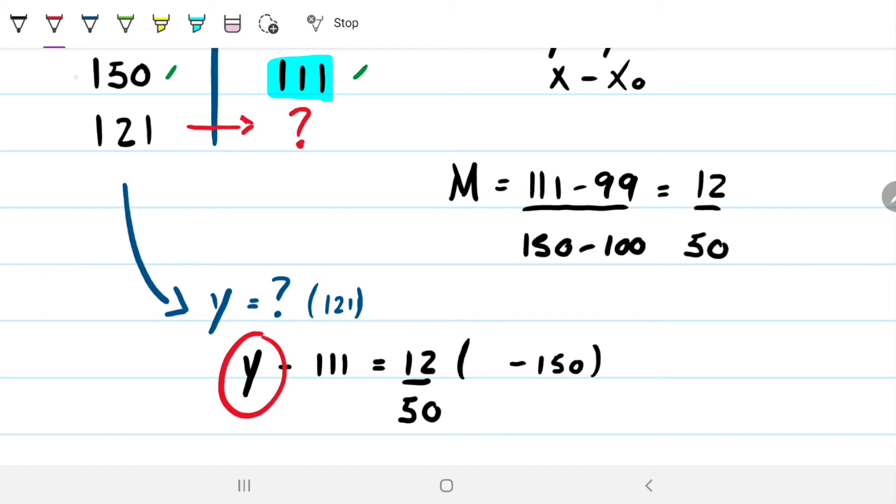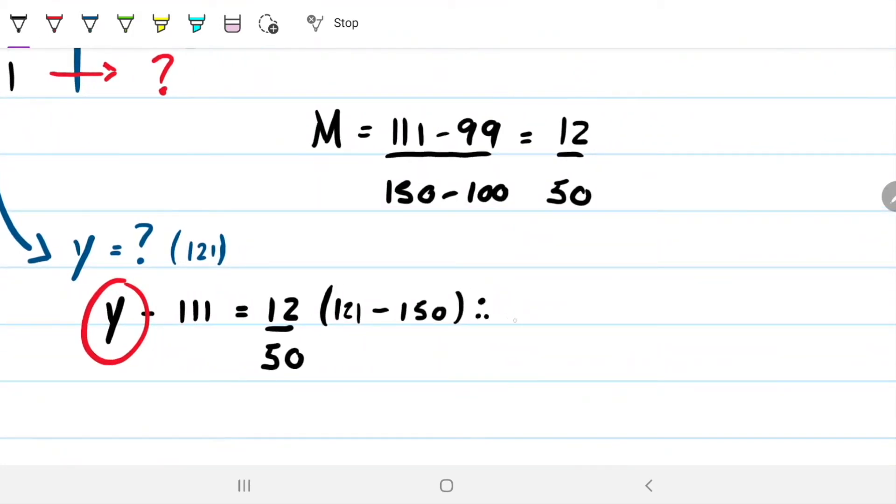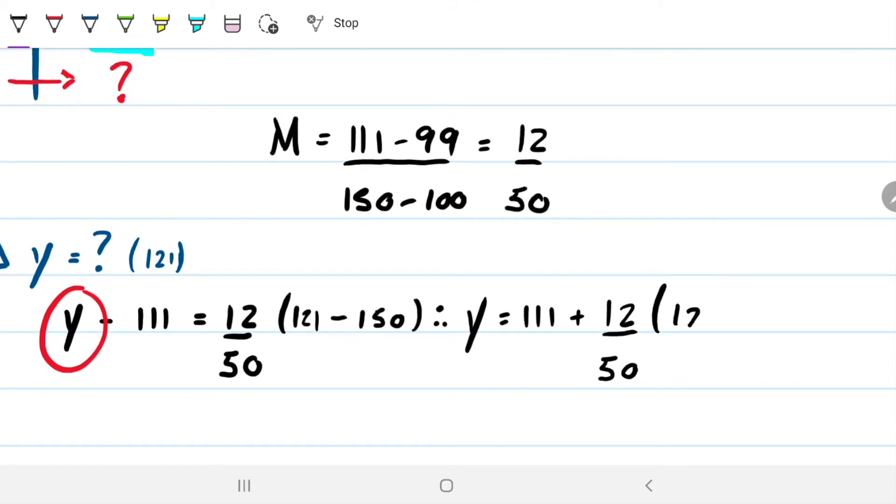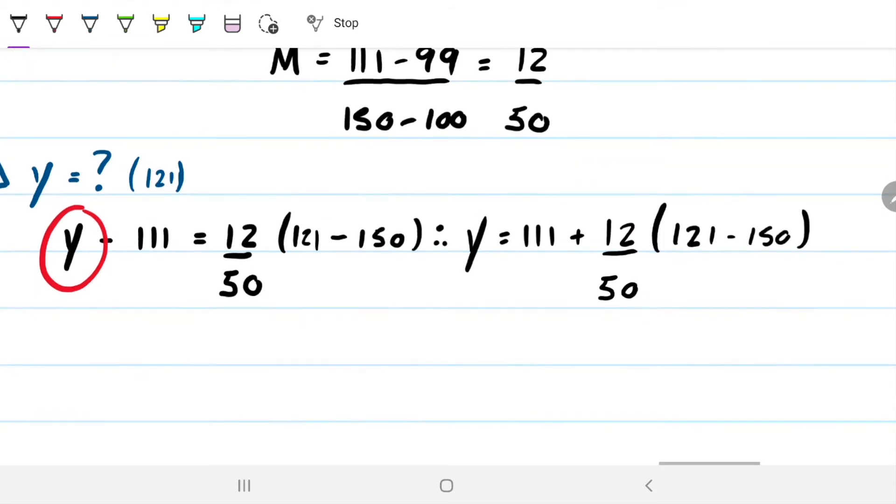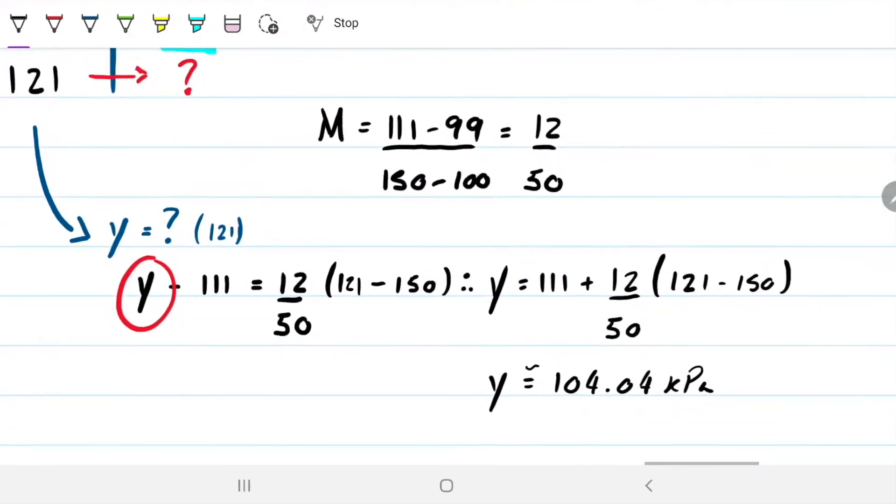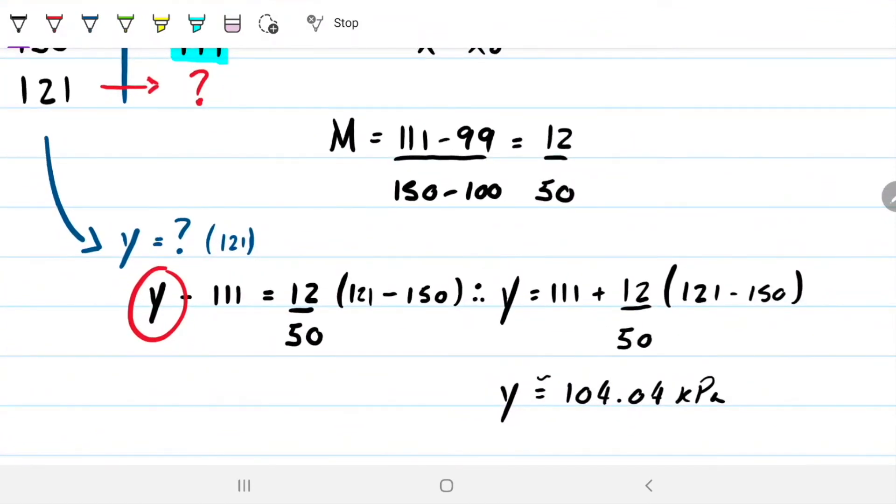So that means I'm going to get rid of this. I'm going to have 121 here. And now I can solve this. I'm going to have that my Y equals 111 plus 12 over 50 times 121 minus 150. And this is going to give me Y is approximately equal to 104 kilopascals, 104.04 for the decimals as well. And that is the interpolation using the mathematical method and doing it by hand.